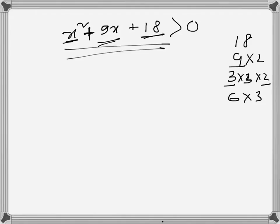6 times 3 is 18, and 6 plus 3 is 9. So I can split this term - I can write 9x in terms of 6x plus 3x. That will be splitting the middle term, which is 9x, and it solves my purpose.